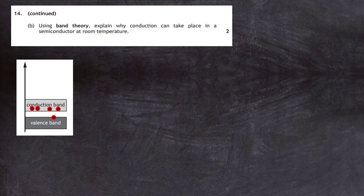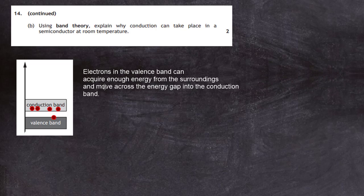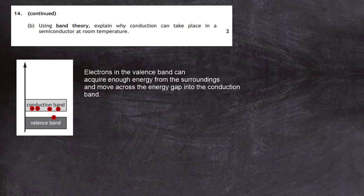To summarize: electrons in the valence band can acquire enough energy from the surroundings at room temperature and move across the energy gap into the conduction band. It is these free electrons in the conduction band that allow conduction to take place in a semiconductor at room temperature.